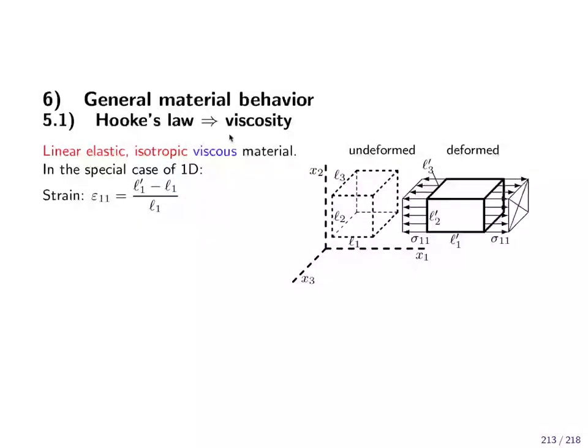This is now not the linear elastic material behavior, this is about general material behavior. Hooke's law is then complemented by many things. I only want to show you one thing and that is viscosity. So we have linear elastic isotropic material as before and we add viscosity.